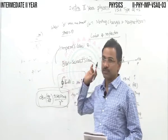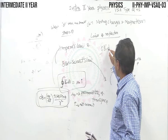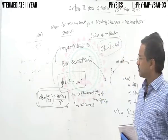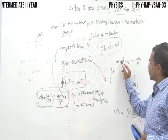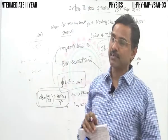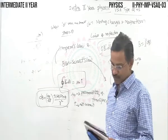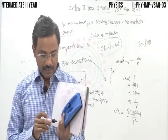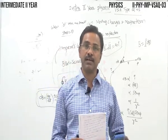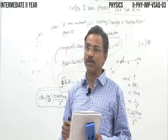Ampere's law: the line integral of magnetic induction field along a closed path equals μ₀ times the net current enclosed. Biot-Savart's law: the magnetic induction field at any point due to a small current carrying element is directly proportional to the strength of the current, length of the element, and sine of the angle between r and dl, and inversely proportional to the square of the distance of the point from the element.